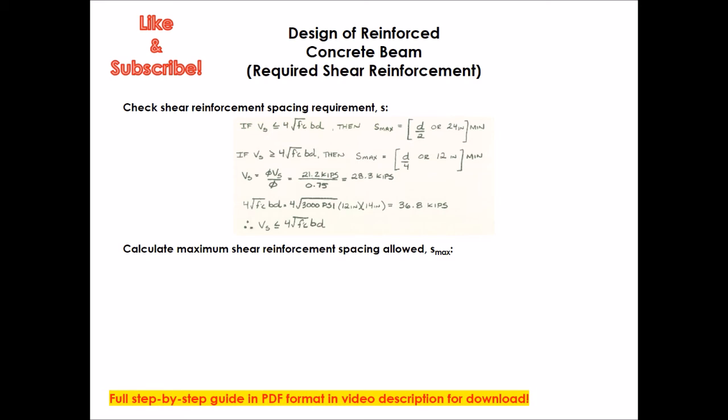Plug that into the equation. We determine that Vs is indeed less than the 4 yada yada yada equation, which is 36.8 kips. So in that case, we want to go ahead to the next step. And we're going to determine our s max. So s max, in our case, is equal to d over 2, or 24 inches, and it's the minimum of one of those two. So our d, which is, once again, the depth of the tension reinforcement. Don't confuse that with the depth of the beam. It's 14 inches divided by 2 equals 7 inches or 24 inches. So the minimum here is 7 inches.